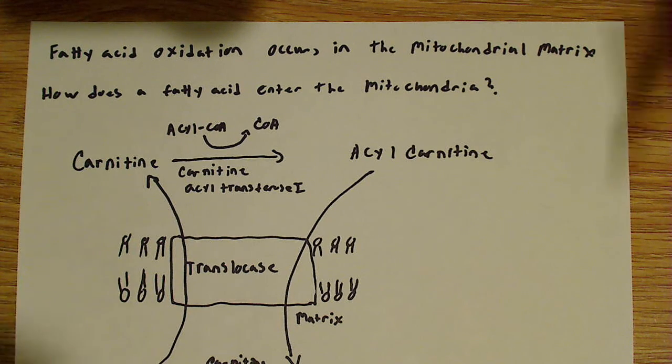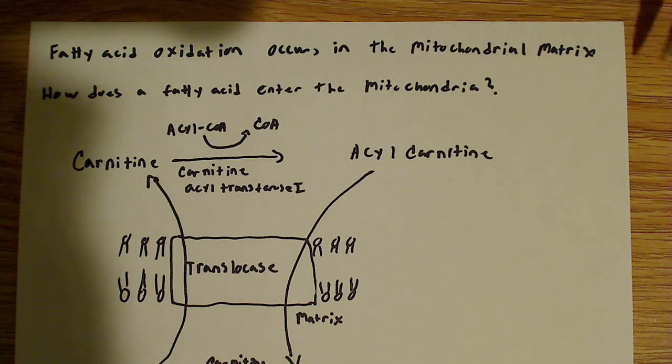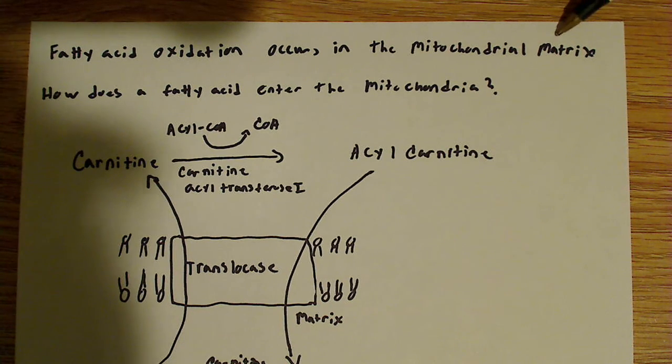Alright, I didn't talk about this in my other videos, but I want to talk about it now because I think it's somewhat important and quite interesting. And that is that fatty acid oxidation actually occurs, so beta oxidation occurs in the mitochondrial matrix.